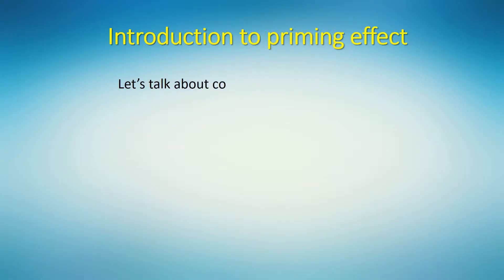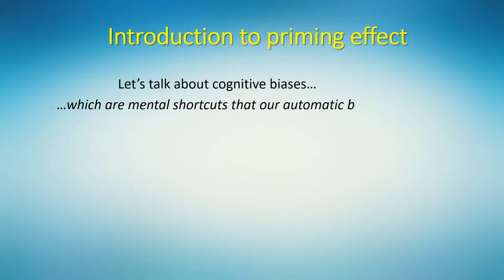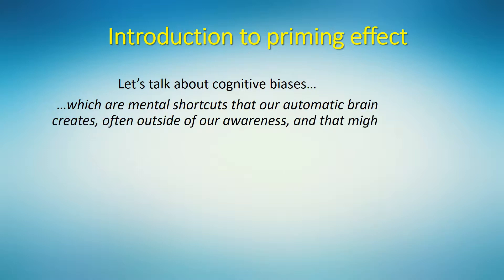Let's talk about cognitive biases. These are mental shortcuts that our automatic brain creates, more often than not outside of our awareness, and that might hinder our assessment in decisions.